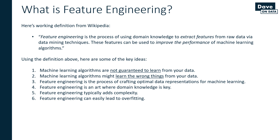Feature engineering can easily lead to overfitting if you're not careful. This is a careful balancing act that you have to execute as a professional using machine learning. You know already that to craft useful models you typically have to add complexity, but you don't want to add too much. Feature engineering not only adds complexity, but if you don't do it carefully you can make it very easy for your algorithms to overfit. The CART algorithm is designed to overfit when it can, so keep all this in the back of your mind.